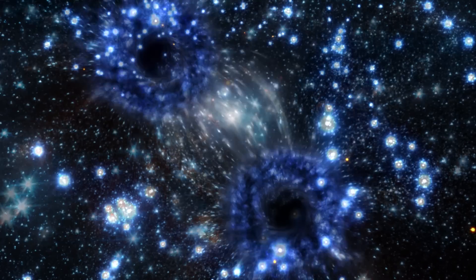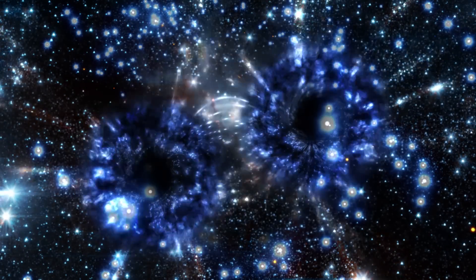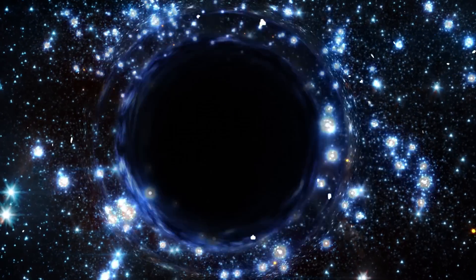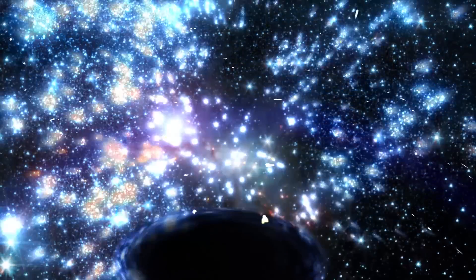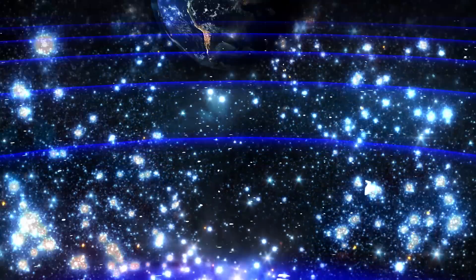These were black holes that were 30 times the mass of the Sun, and the two of them orbited together, coalesced, and formed a black hole which was 60 times the mass of the Sun.